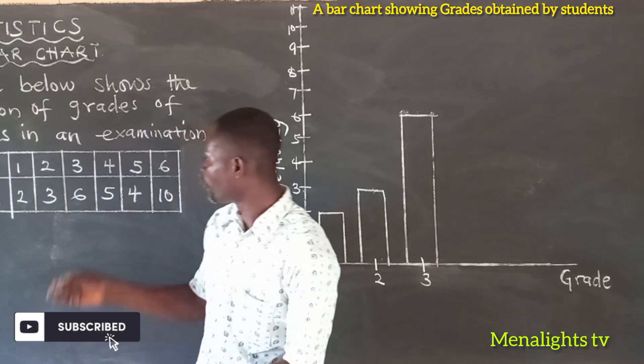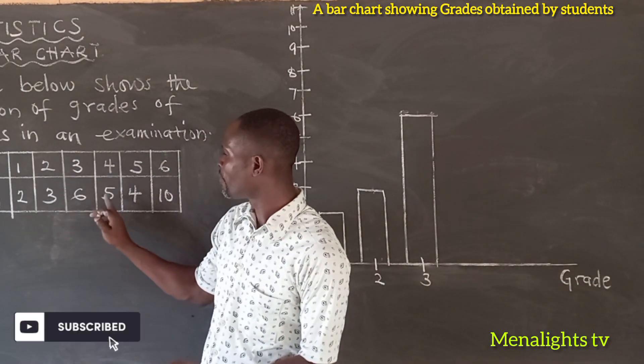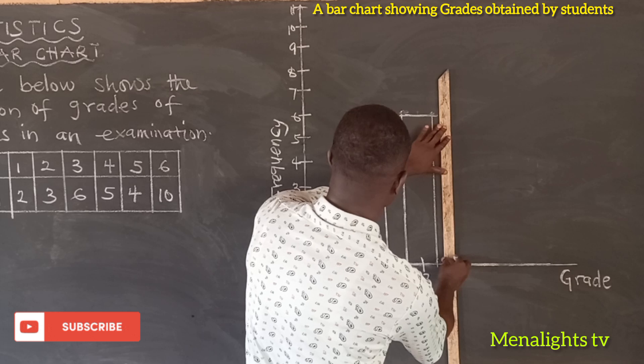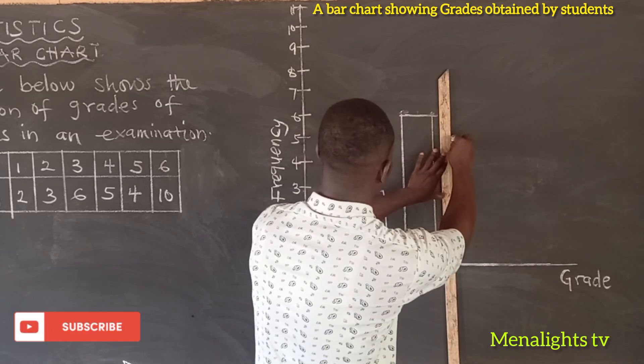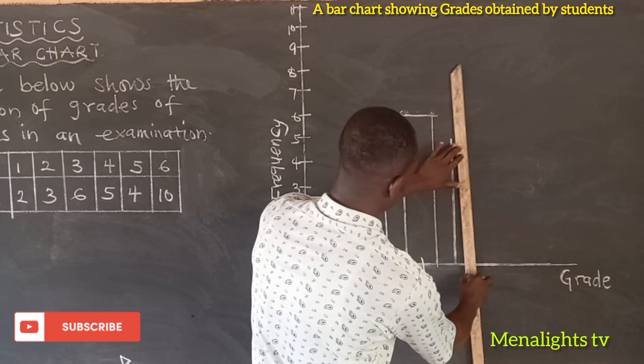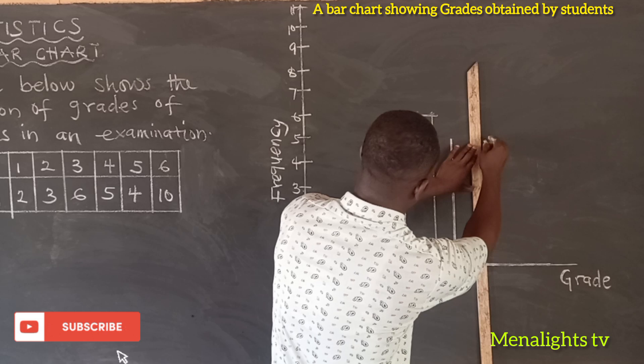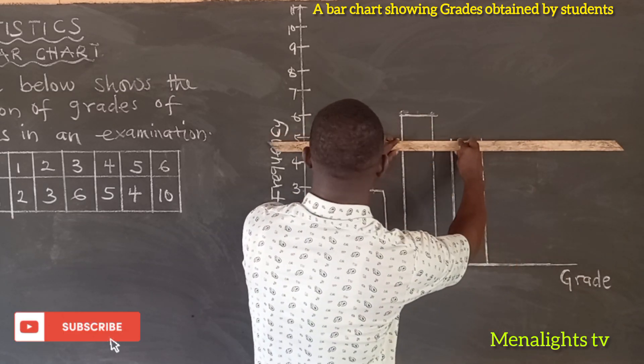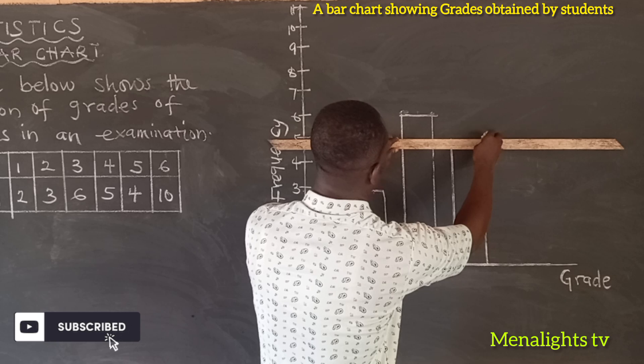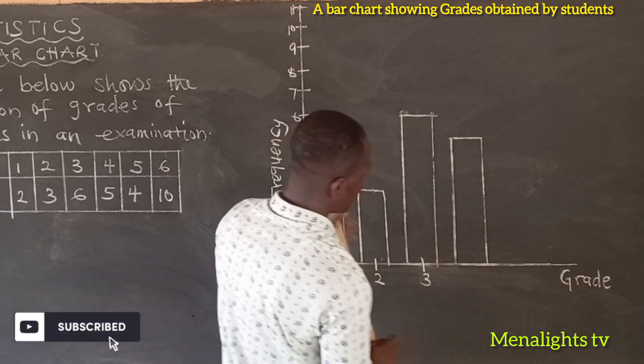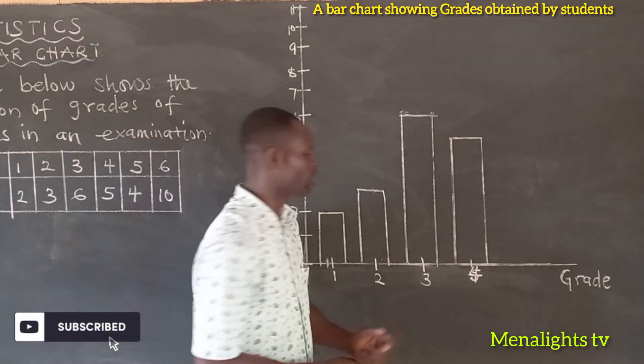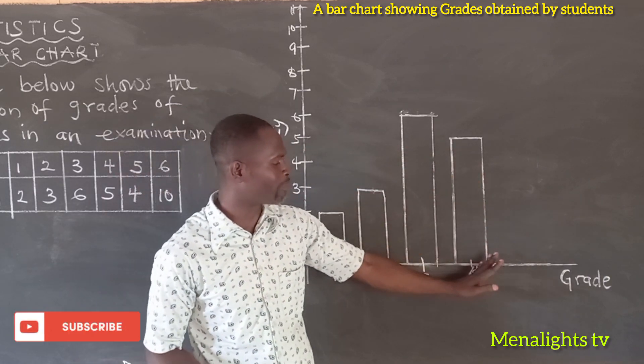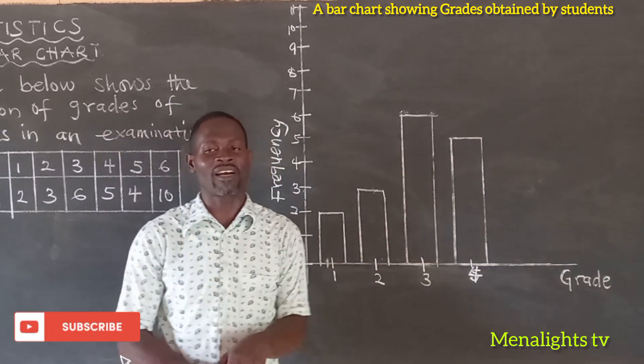Now let's go to grade 4. Grade 4, 5 students or 5 people score grade 4. So we have to show our grade 4, which is having a frequency of 5. Because of that, we extend the graph from the origin to where we have our 5.